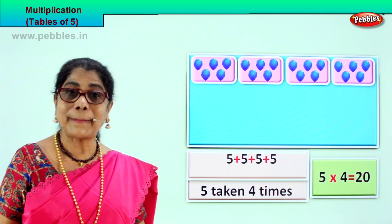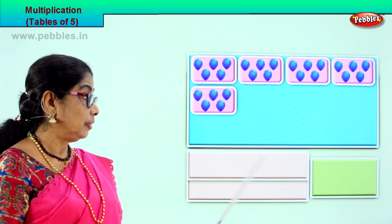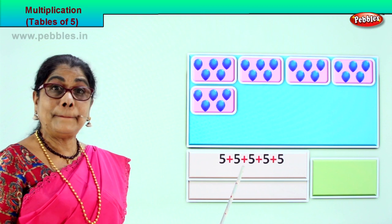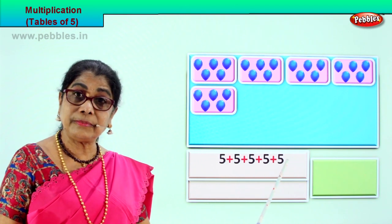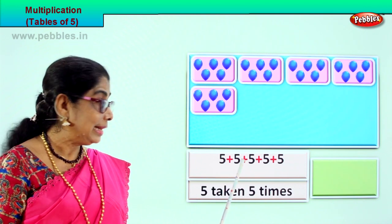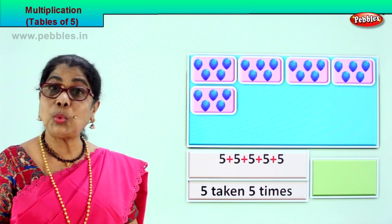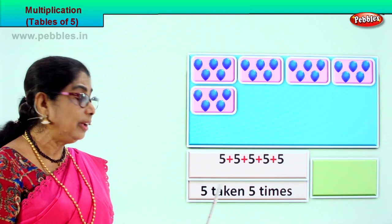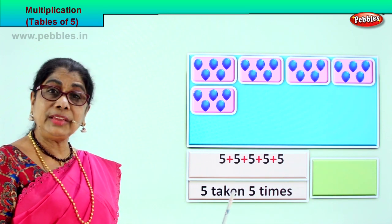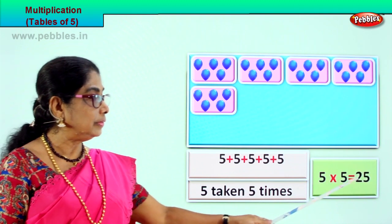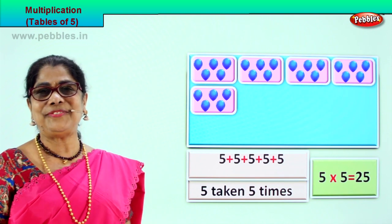Shall we take another grouping of five? Look — one, two, three, four, five. You have five groups of five. Multiplication is repeated addition. So we add five five times. Five plus five, ten. Ten plus five, fifteen. Fifteen plus five, twenty. Twenty plus five, twenty-five. How many times? Five taken five times. So we write this as five into five is equal to twenty-five. Five fives are twenty-five.